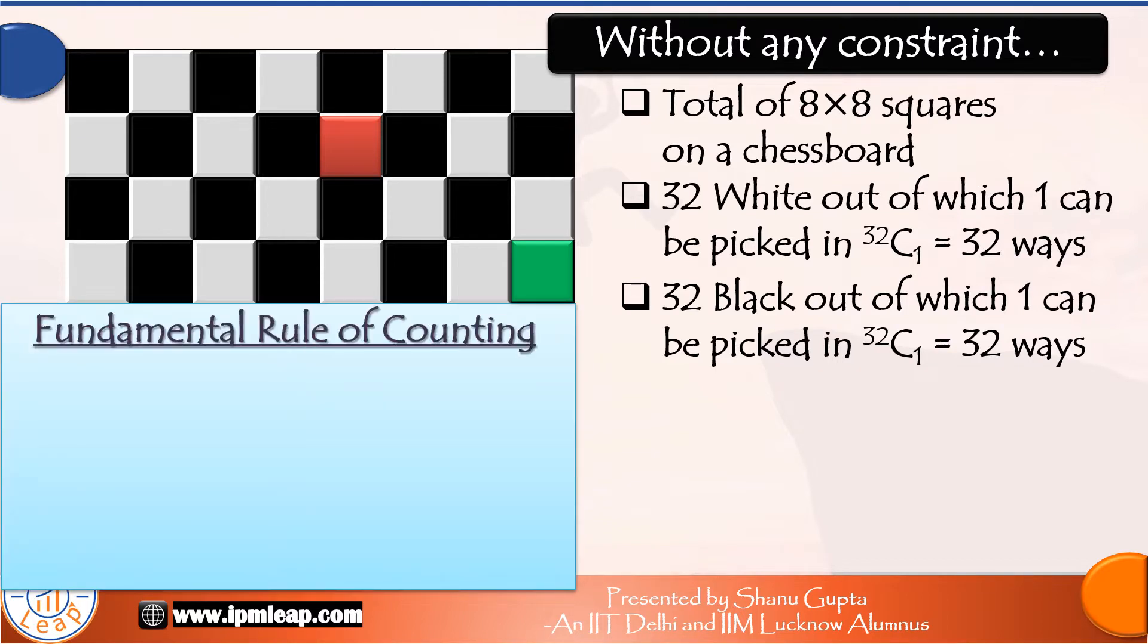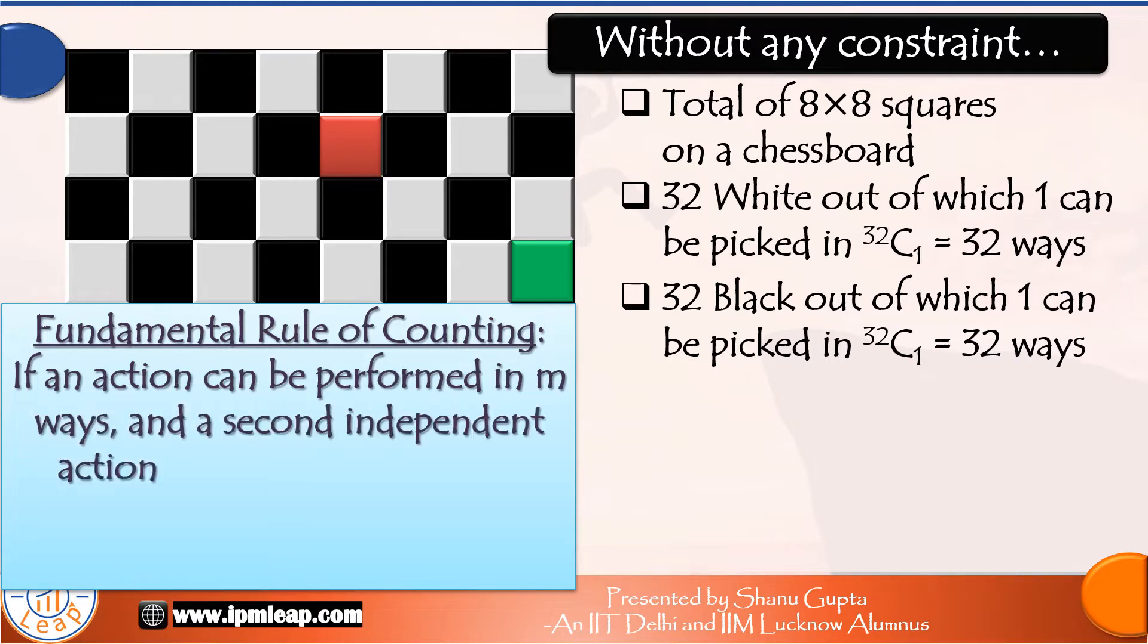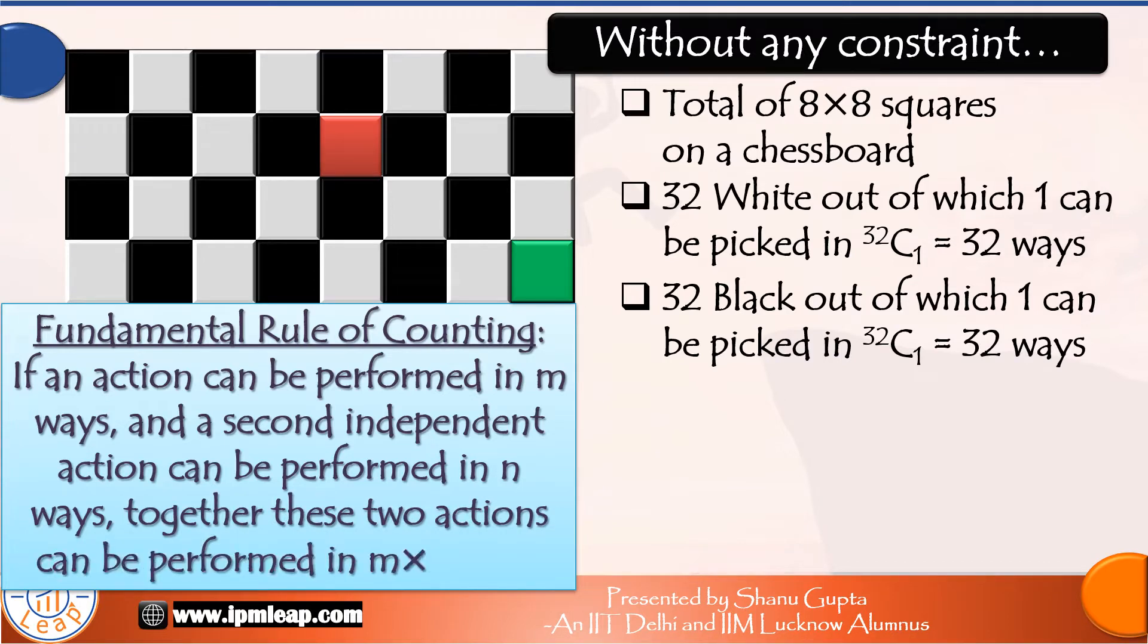The fundamental rule of counting says that if an action can be performed in m ways and a second independent action can be performed in n ways, together these two actions can be performed in m into n ways.